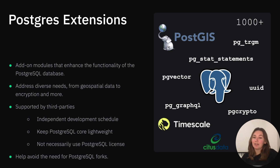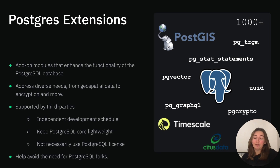Apart from several extensions that are distributed with Postgres, they are supported by third parties. This means several things. Firstly, they do not follow the Postgres development schedule, which is only one major release per year. Extension developers can iterate faster, while Postgres core remains lightweight and very stable. This also allows developers to commercialize Postgres, because extensions do not have to use Postgres licenses, which in turn helps to avoid the need for Postgres forks and helps to keep the project together.